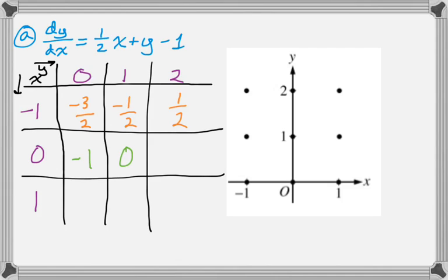At 0, 0, I just get negative 1. At 0, 1, I get 0, and 1, finally, for 0, 2. Negative 1 half, 1 half, and 3 halves.